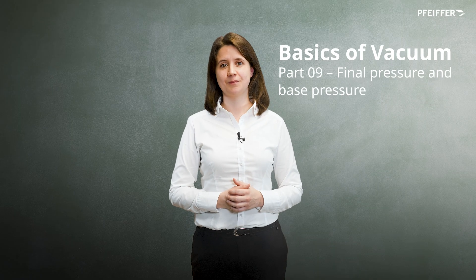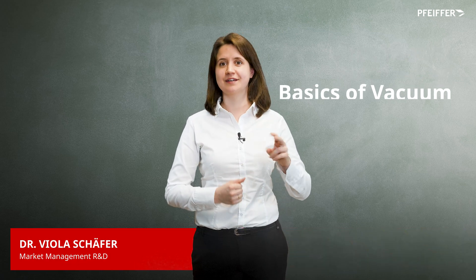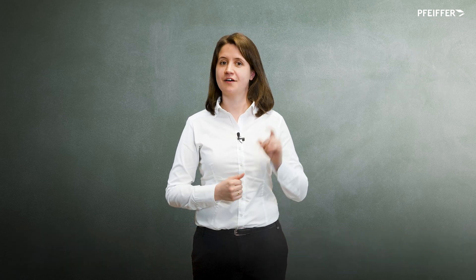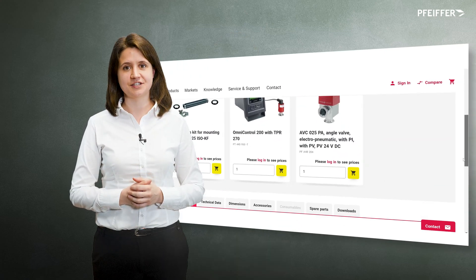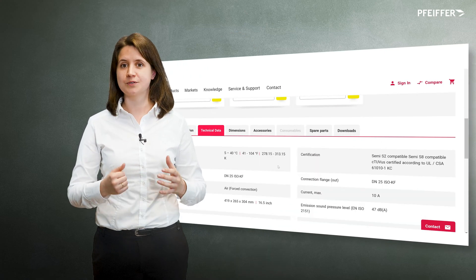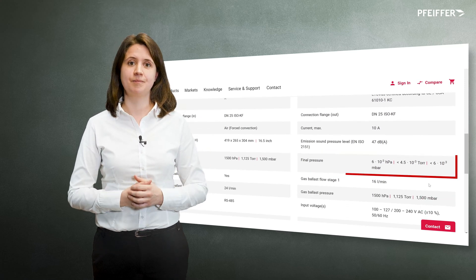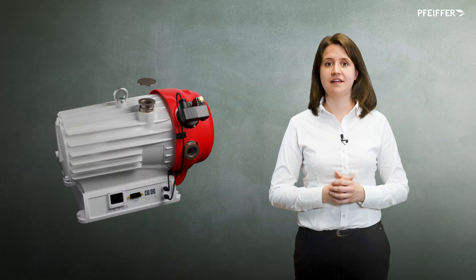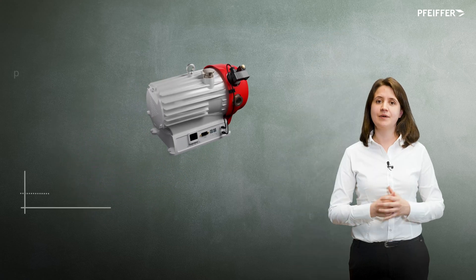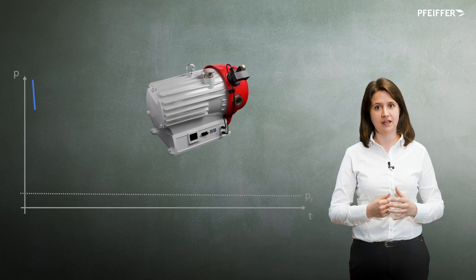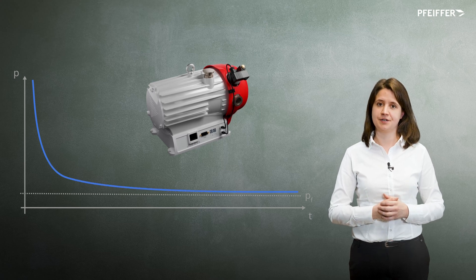Hello and welcome to Pfeiffer Vacuum. My name is Viola, and in this video today we discuss two important characteristics of vacuum pumps: final pressure and base pressure. When reading the specifications of vacuum pumps you will almost always find it — the final pressure, also called ultimate pressure. This is the lowest pressure that a blind-flanged vacuum pump can achieve. The pump reaches the final pressure asymptotically, and there are firmly defined boundary conditions for the final pressure.